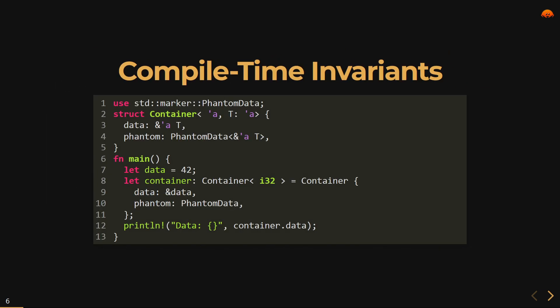Compile-time invariance and preventing unintended behavior: with PhantomData we can establish rules and constraints that must be satisfied at compile time, preventing unintended runtime behavior. In this example Container holds a reference to data with a specific lifetime 'a. By including PhantomData we enforce the relationship between the data reference and the container's lifetime, preventing situations where the container outlives the referenced data and ensuring memory safety at compile time.